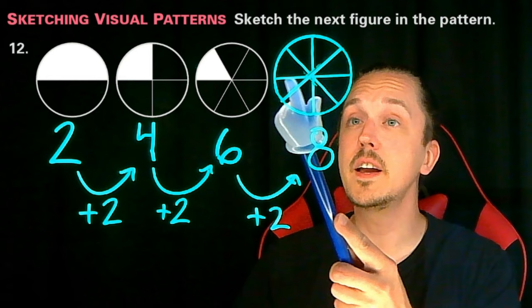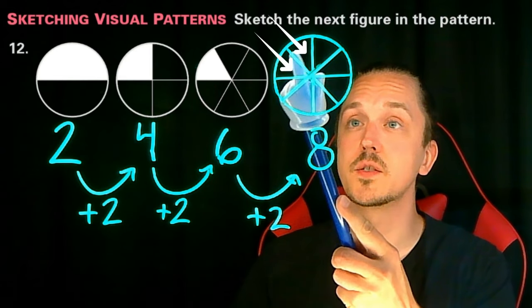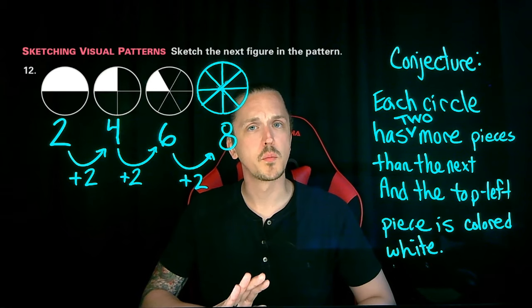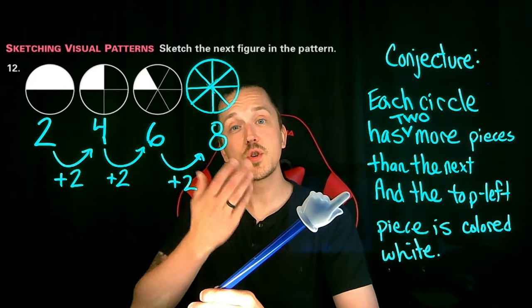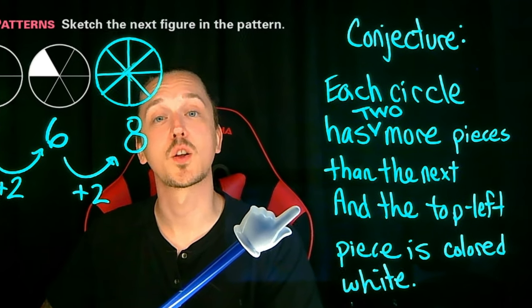In our eight-piece circle, either of these two pieces could be considered top left. Pause for a quick moment. Which of our eight pieces here should be colored white? How would you correct our conjecture to describe which of these pieces to color white?